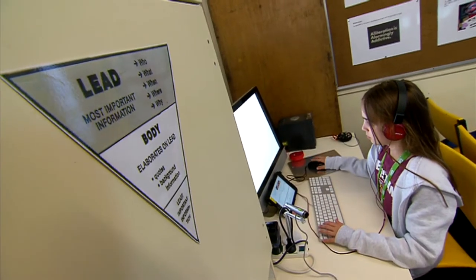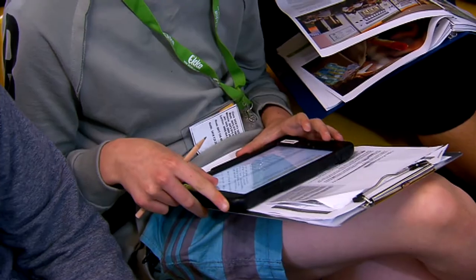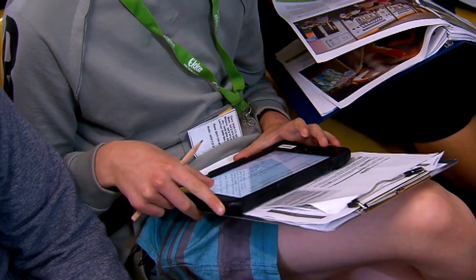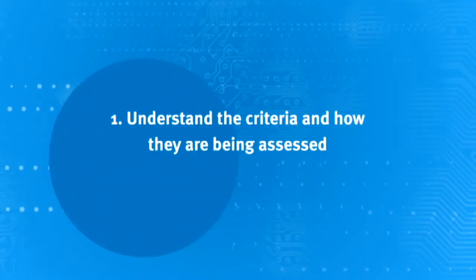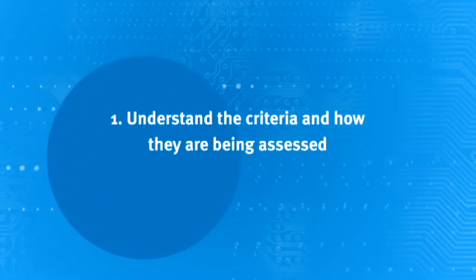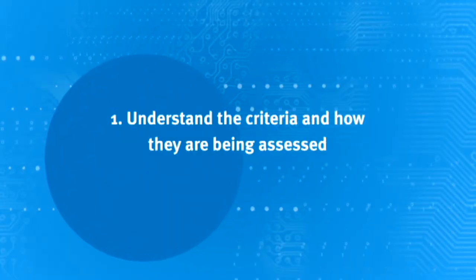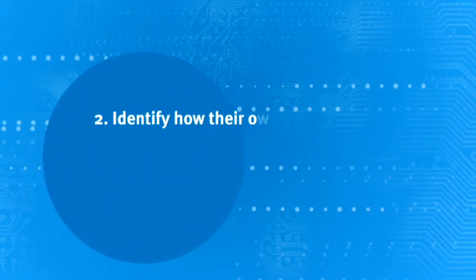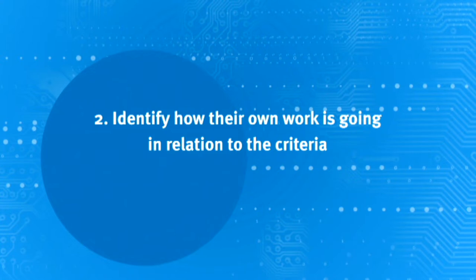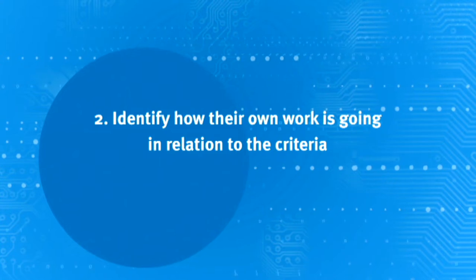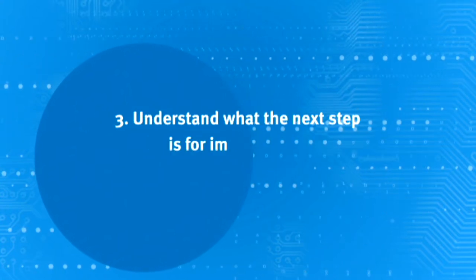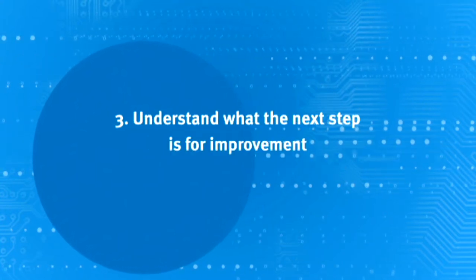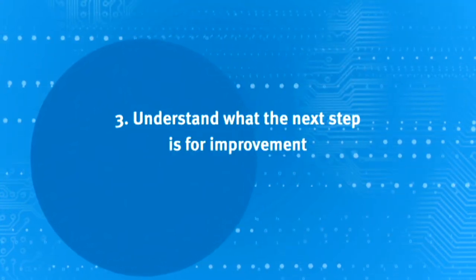For learners to be able to self-assess, they really need to know three things. First, they need to know the criteria for how they're being assessed. Second, they need to know how they're going in relation to that. And third, they need to know what they could do next to improve.